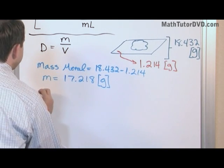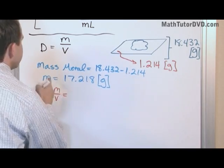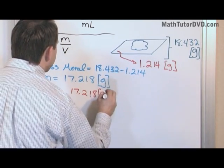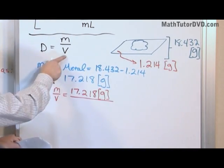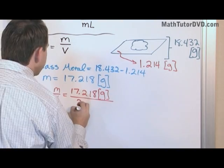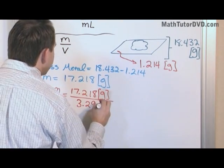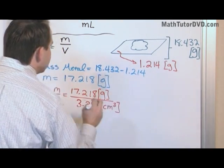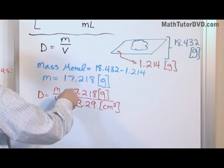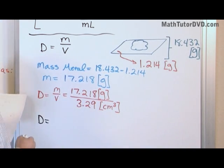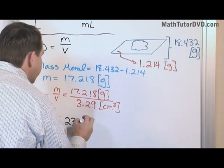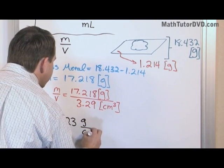Now we have everything we need. Density equals mass divided by volume. The mass we just calculated is 17.218 grams, and the volume — the volume of the metal chips given in the problem — is 3.29 cubic centimeters. So all we have to do is divide: 17.218 divided by 3.29 gives us 5.23, and the unit is grams per cubic centimeter.